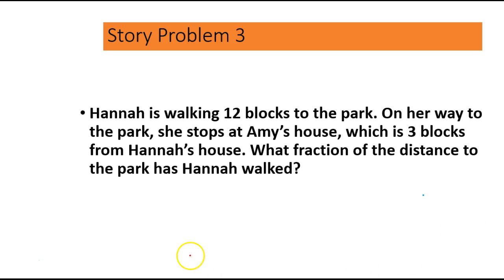Here's the next one. Hannah is walking 12 blocks to the park. On her way to the park, she stops at Amy's house, which is 3 blocks from Hannah's house. What fraction of the distance to the park has Hannah walked? So if Hannah starts at her house, and she walks 3 blocks to Amy's house, and there are 12 total blocks. So we have 3 blocks, 4, 5, 6, 7, 8, 9, 10, 11, 12, and here's the park.